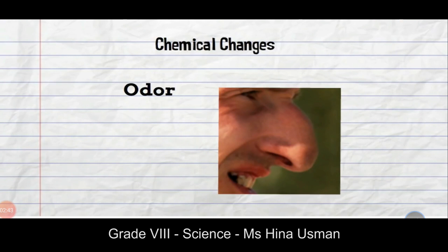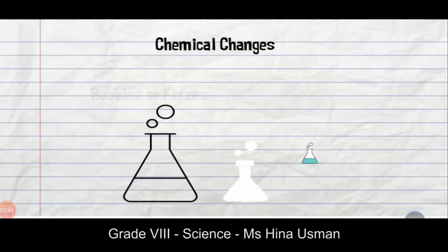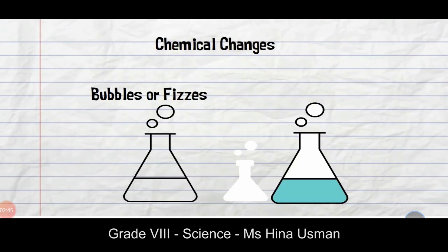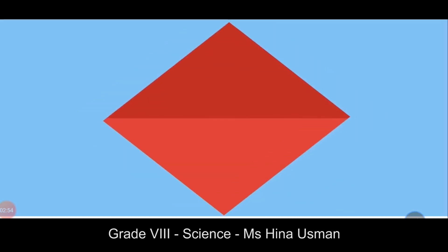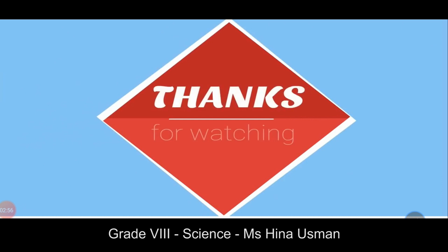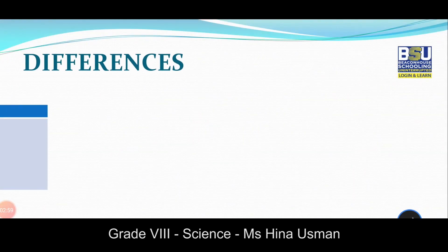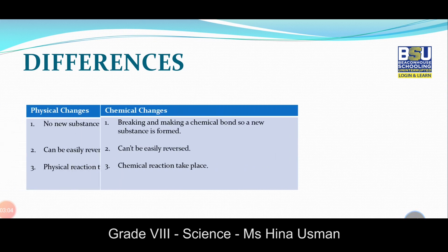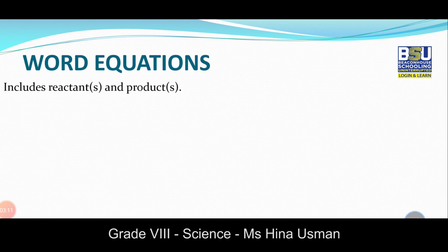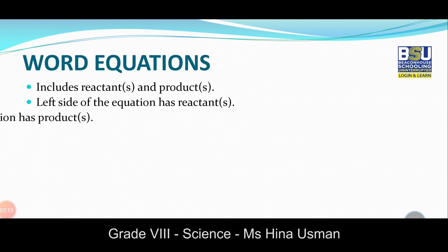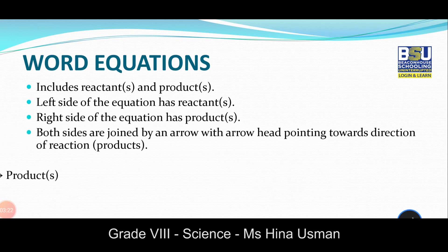The next type is decomposition reactions, in which one reactant yields two or more products. They are usually endothermic reactions. Exothermic reactions release energy as light or heat, whereas endothermic reactions absorb energy from surroundings, usually in the form of heat. Examples of decomposition reactions include the decomposition of copper carbonate and the decomposition of calcium carbonate — both reactions require heat energy.